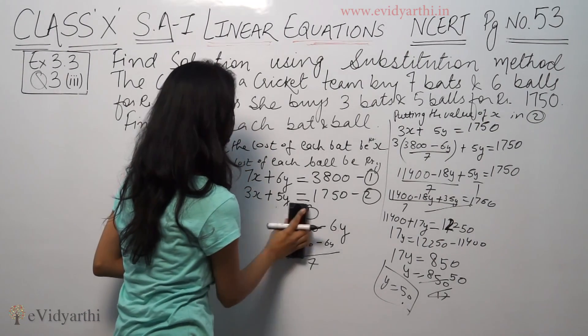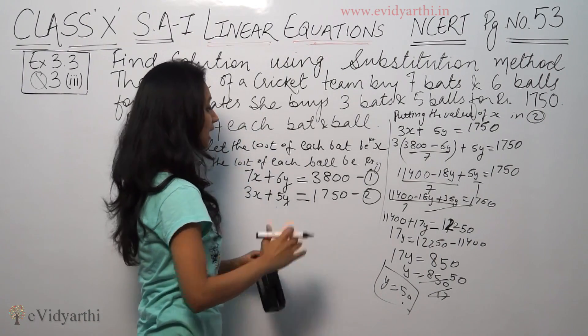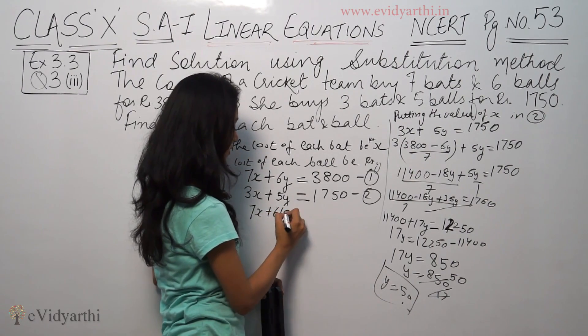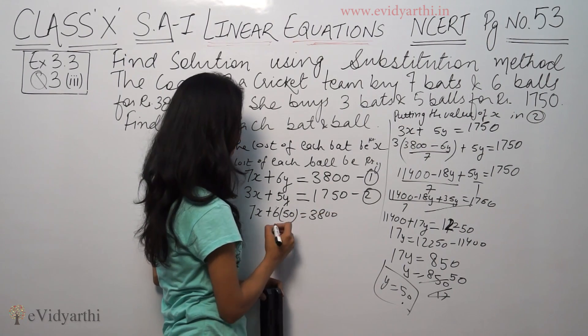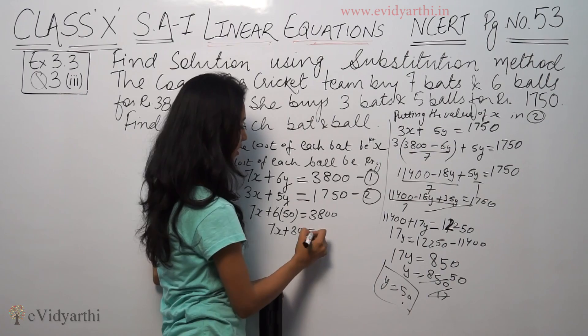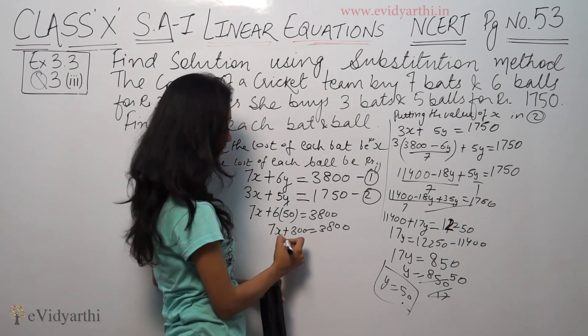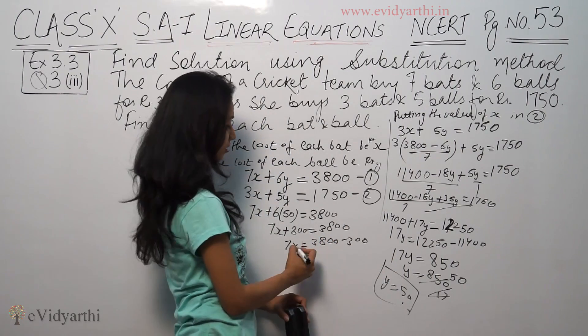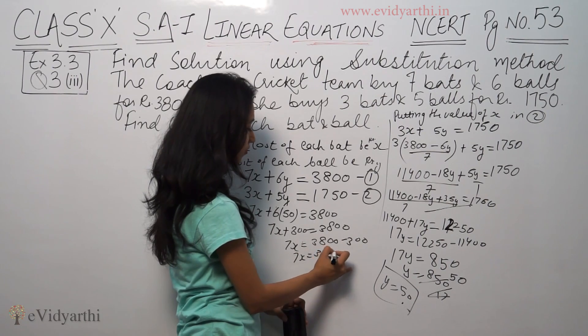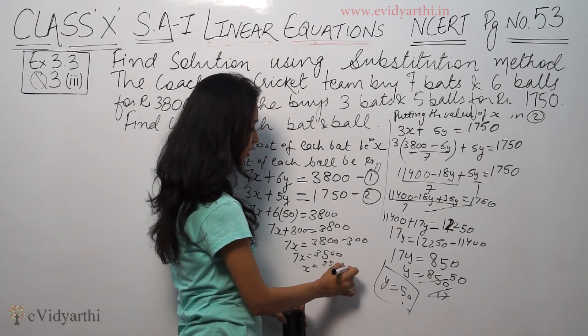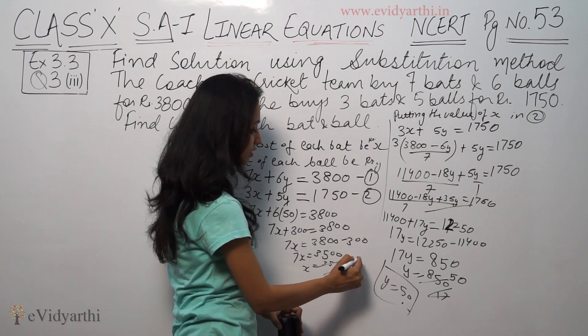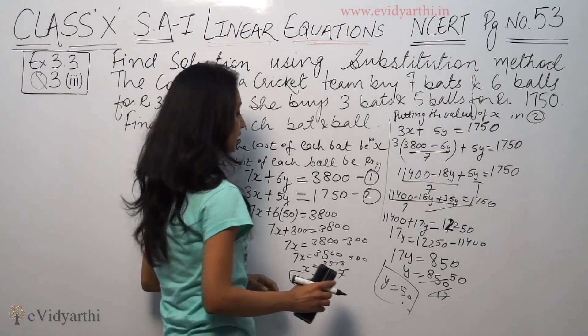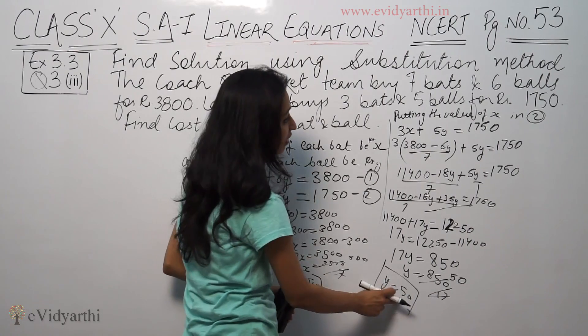Now we will find the value of x. Putting y equals 50 in the first equation: 7x plus 6 times 50 equals 3800. 7x plus 300 equals 3800. 7x equals 3800 minus 300. 7x equals 3500. So x equals 3500 divided by 7, which means x equals 500.